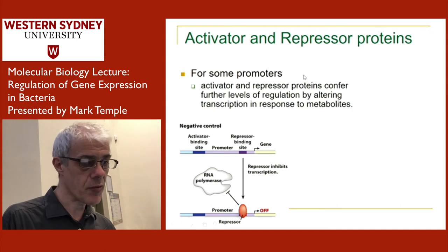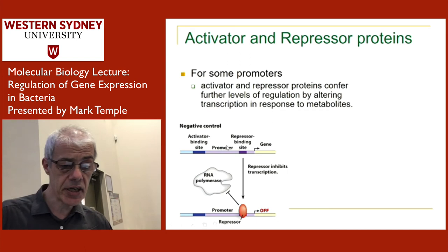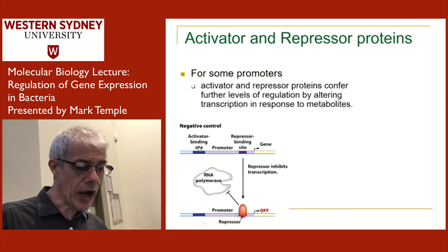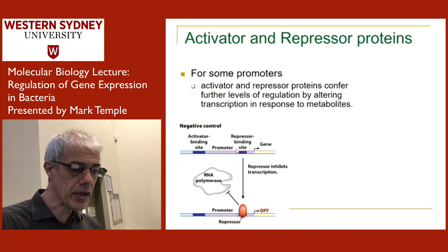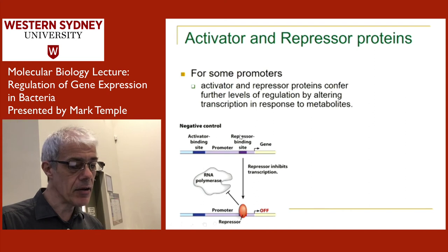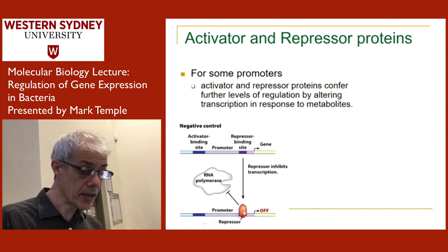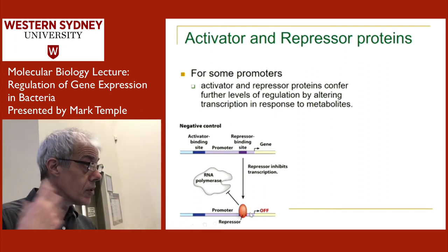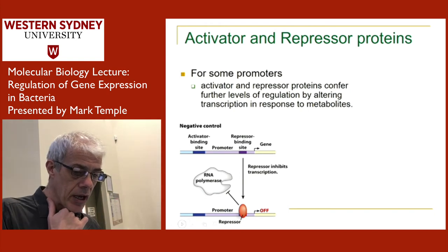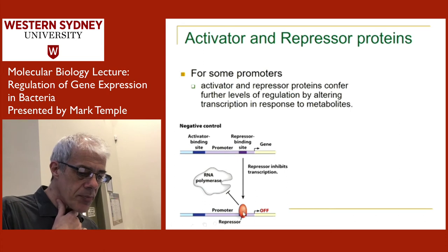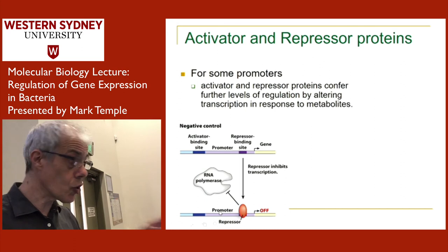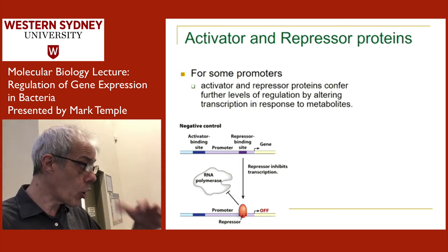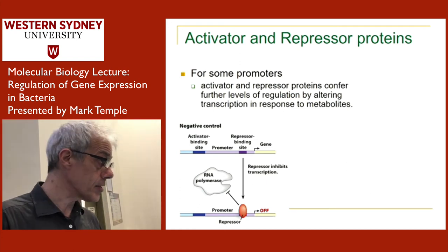Activators and repressors confer further levels of regulation by altering transcription in response to metabolites. A repressor protein shown at the promoter has a binding site within the promoter in addition to the RNA polymerase binding site. The repressor protein can function in one of two ways: it can stop the polymerase from binding to the promoter, or when the polymerase is bound, it can stop the polymerase from moving through the promoter — acting as a roadblock.